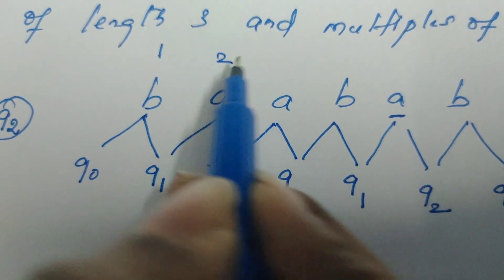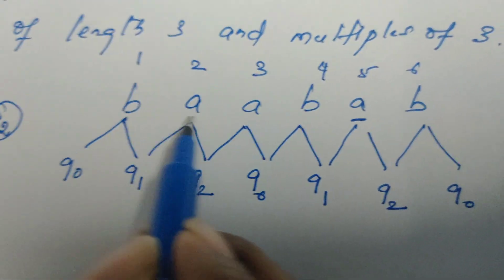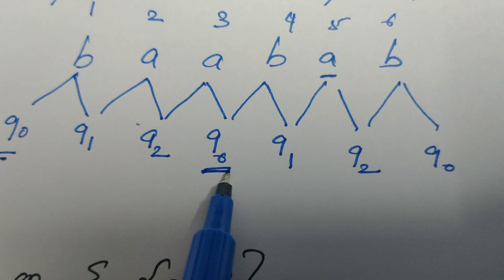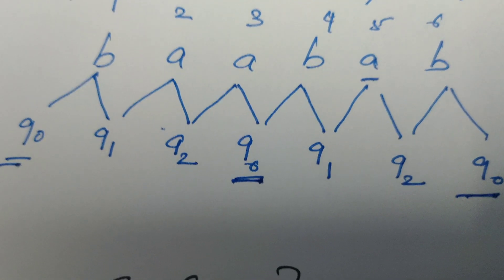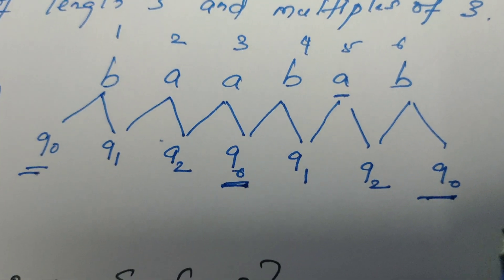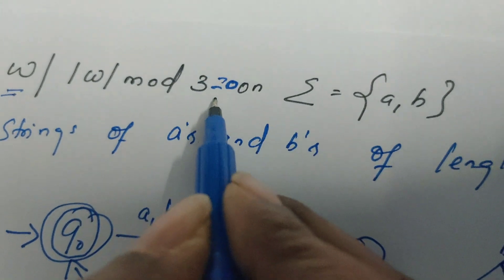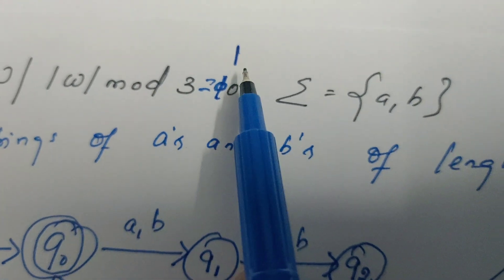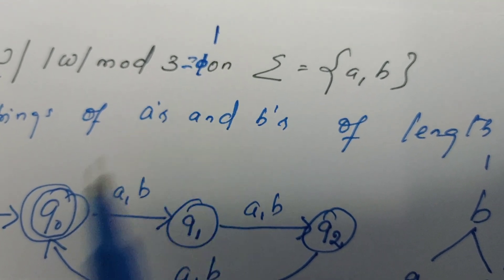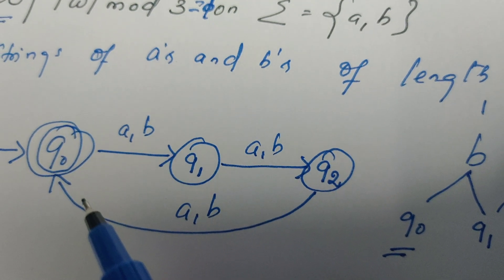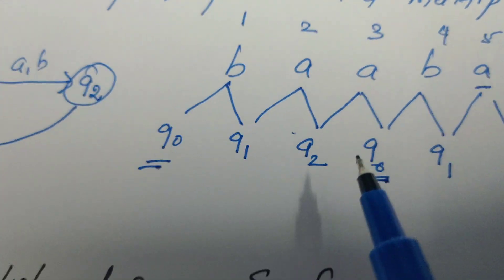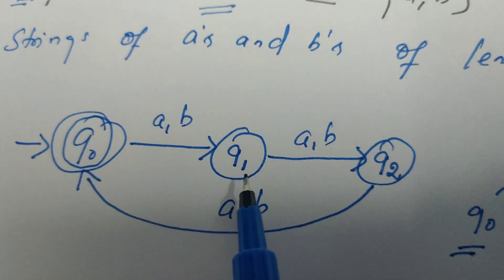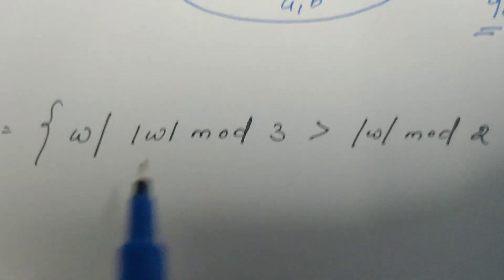Consider the string of length 6. Initially the machine is in Q0. When the string length reaches 3 it comes back to Q0, and when length is 6 it also enters Q0 — so Q0 is the final state. If instead the question asks for length of w modulo 3 equal to 1, the lengths accepted would be 1, 4, 7, 10, etc. The structure remains the same but Q1 becomes the final state.